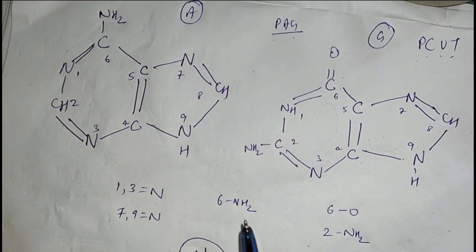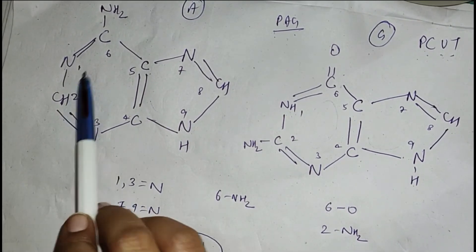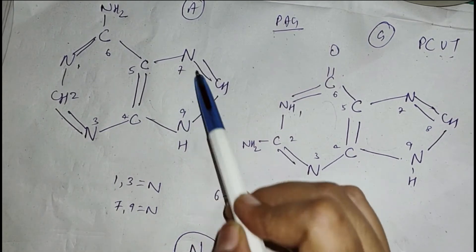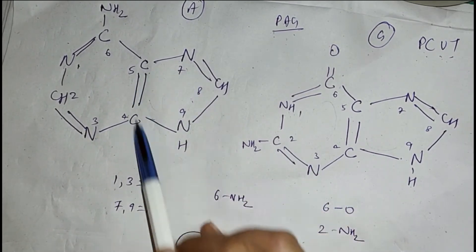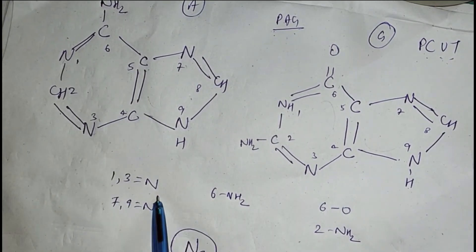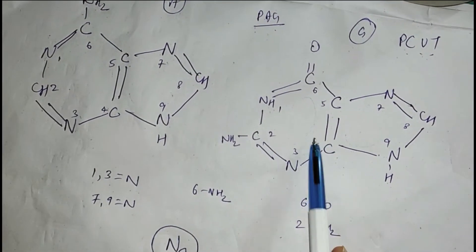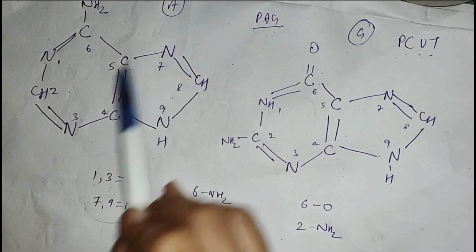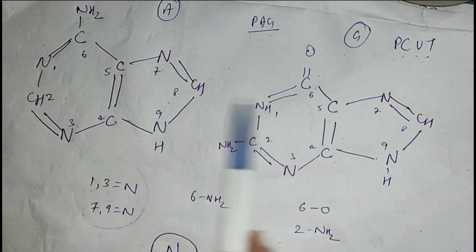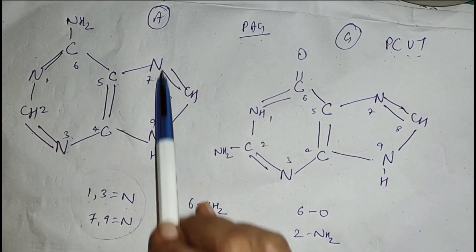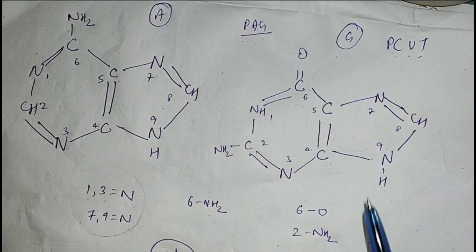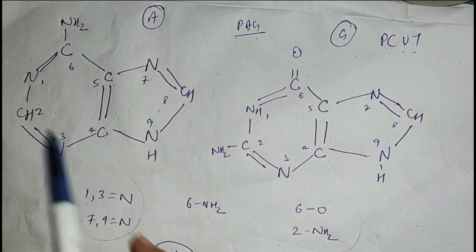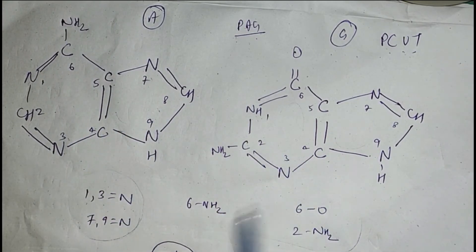In case of purines — adenine and guanine — nitrogen atoms are present at both the 1st and 3rd positions. In adenine, positions 1 and 3 are nitrogen, and other places are carbon. In the second ring, the 7th and 9th positions are occupied by nitrogen and the other places by carbon. So you can remember: 1, 3, and 7, 9 are nitrogen positions. In case of adenine and guanine, the 6th position is modified: adenine has NH2 at the 6th position, and guanine has O at the 6th position. Additionally, in guanine, carbon number 2 has NH2.